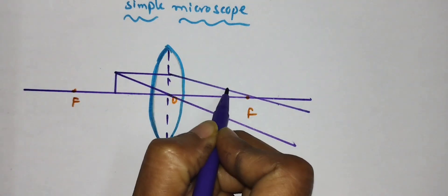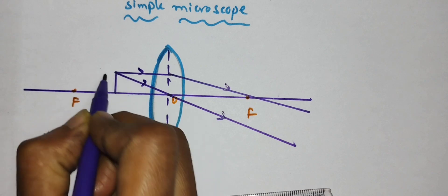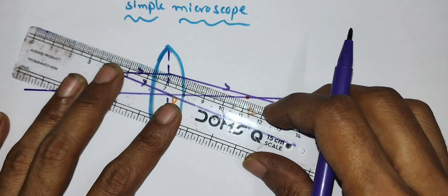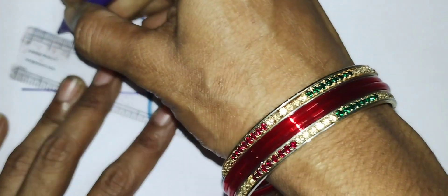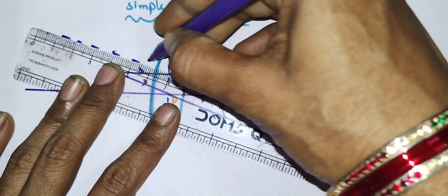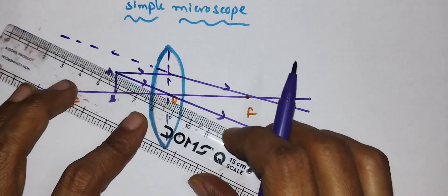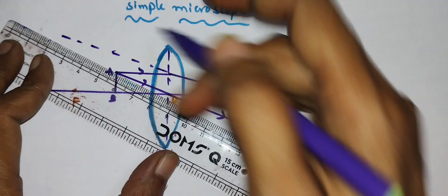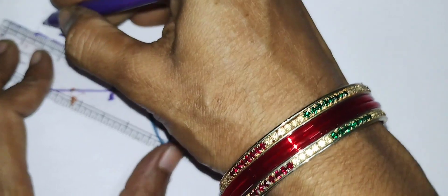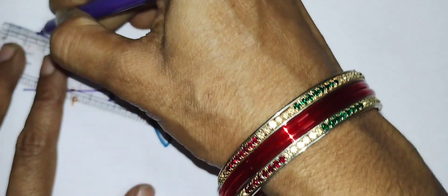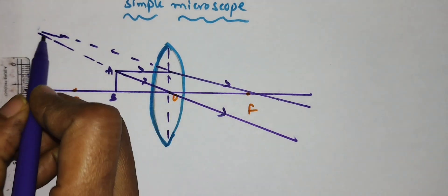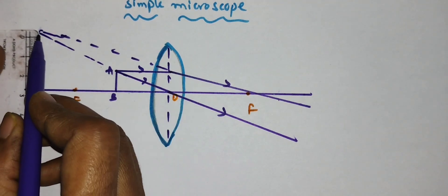For this case, the image should be observed on the same side as the object. That's why we are extending this ray on the object side. This is the extended rays from the focus and from the optical center. The image is forming on the same side of the lens, which is a virtual, erected, and enlarged image.